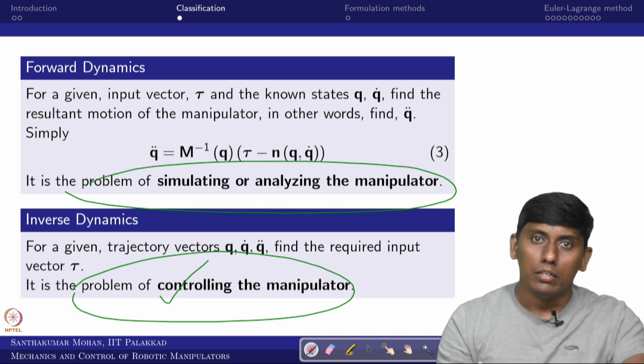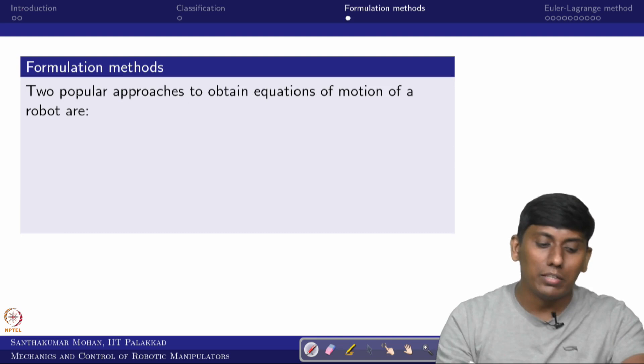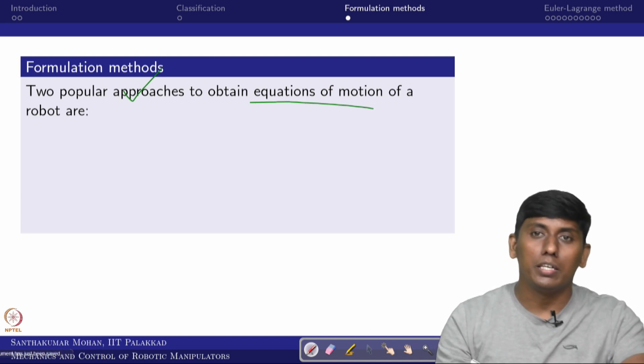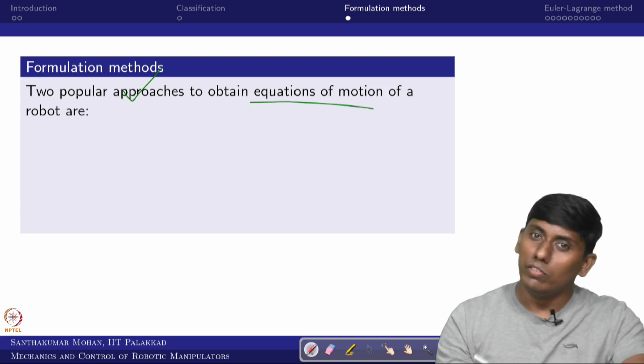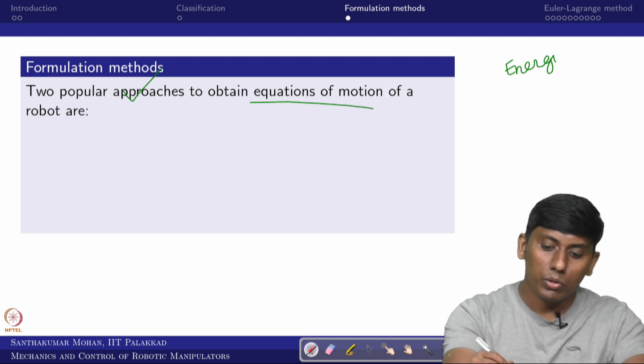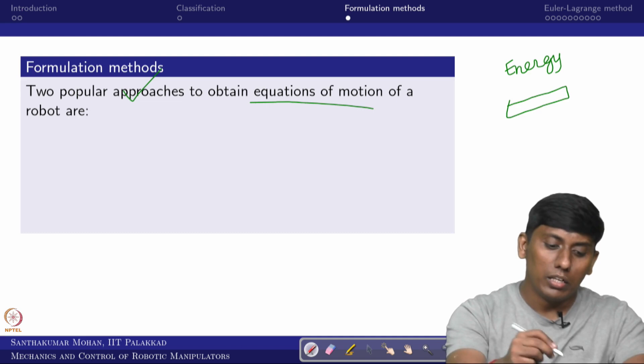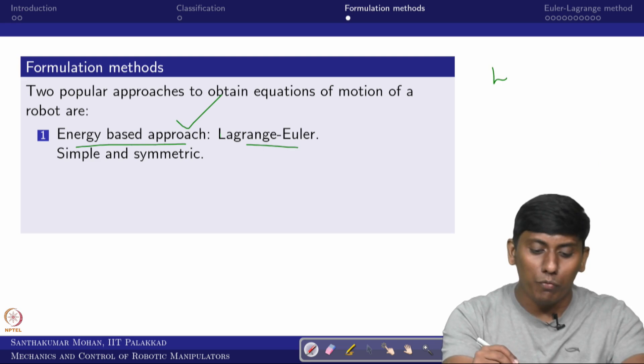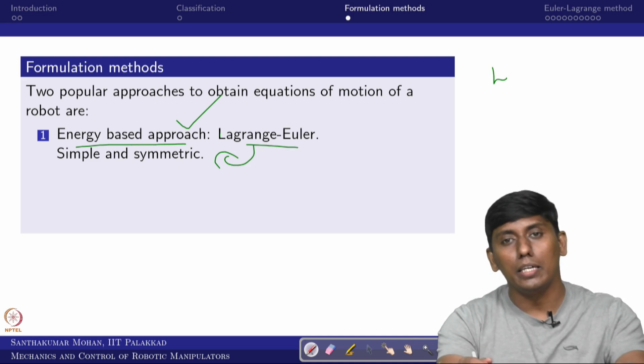Now we will see the formulation methods. There are several methods, but we will take two popular ones useful for deriving equations of motion of a robot or manipulator in rigid body dynamics. One is the energy approach and the other is the equilibrium approach — also called the momentum approach.